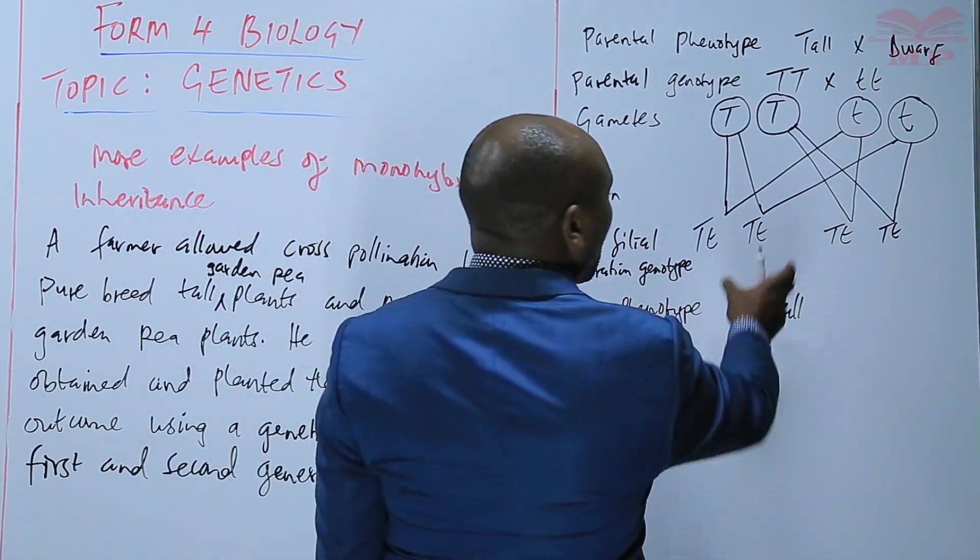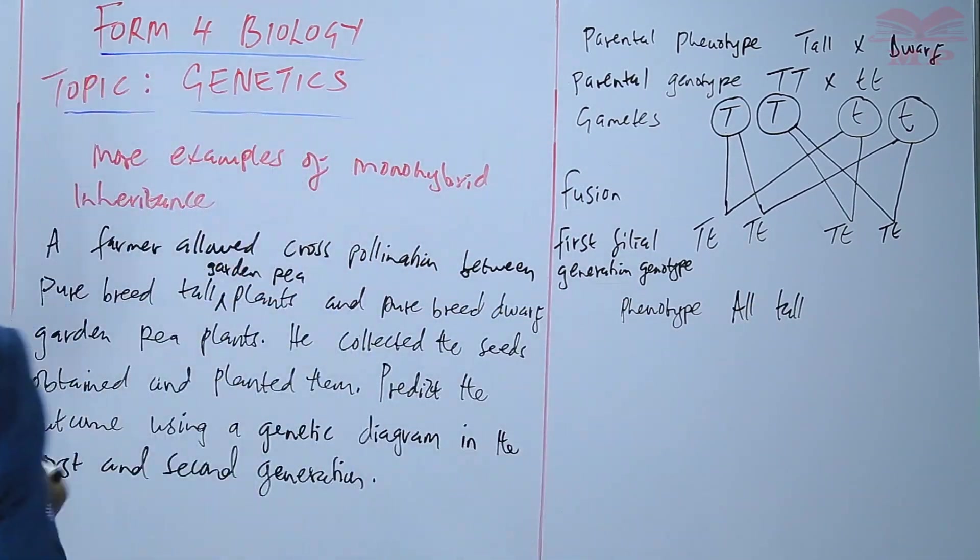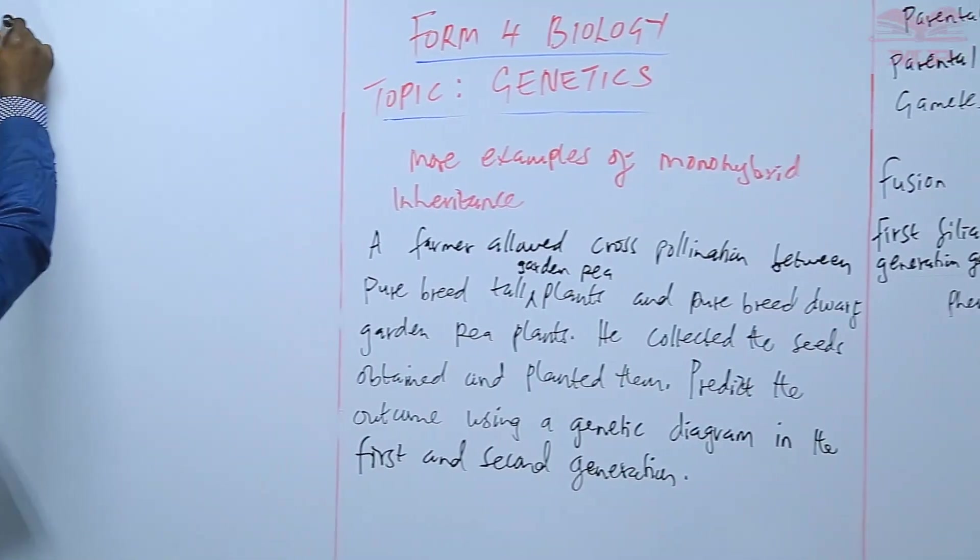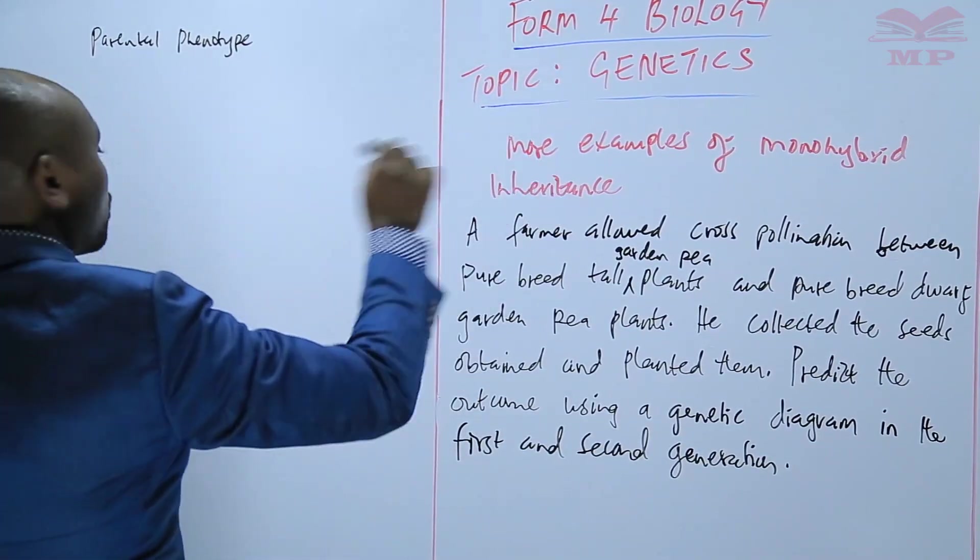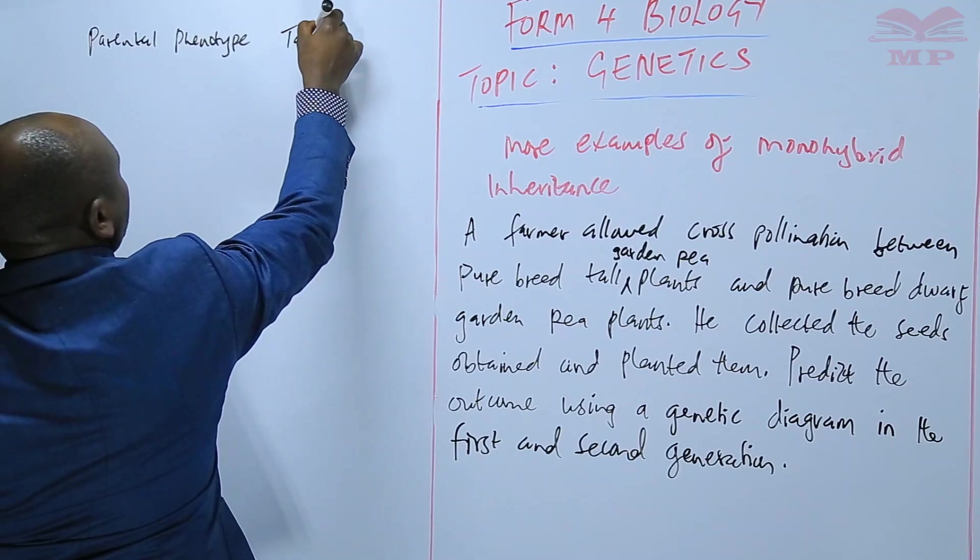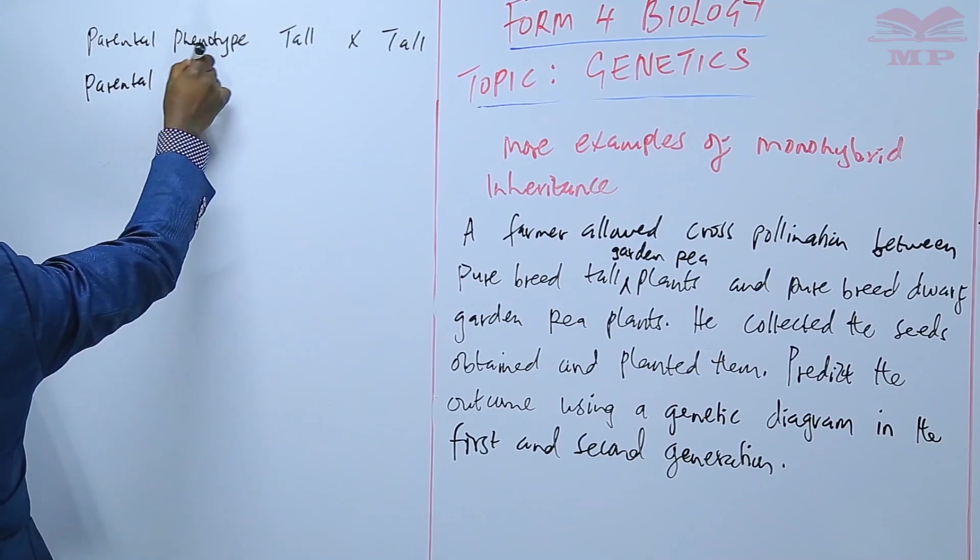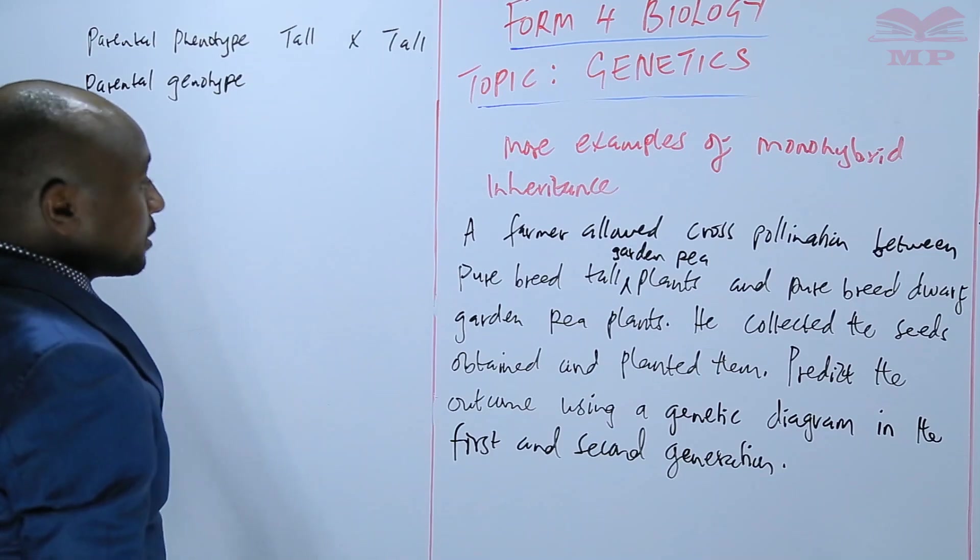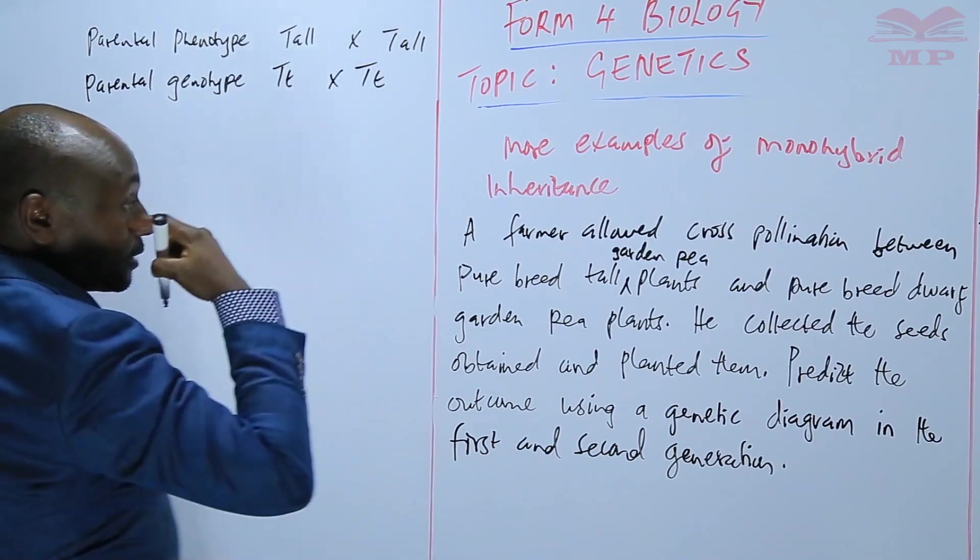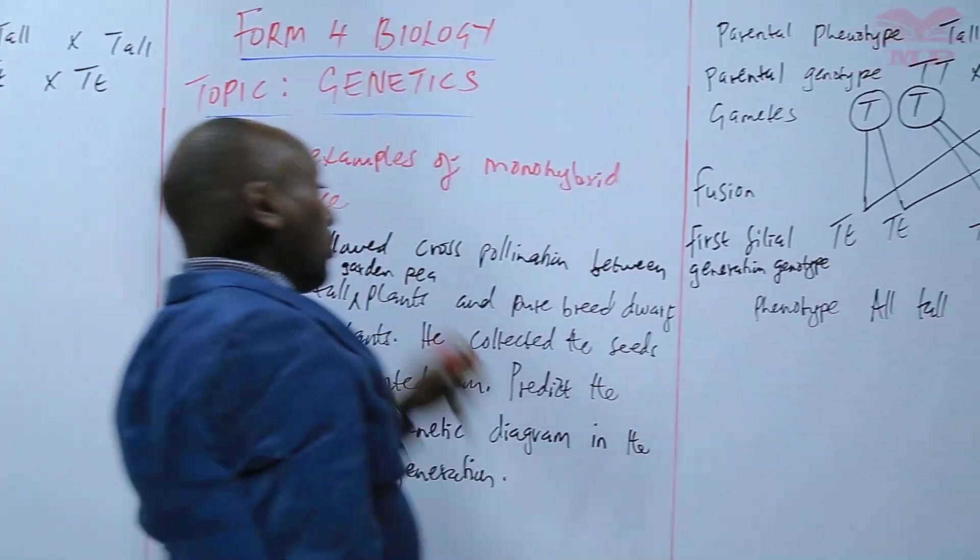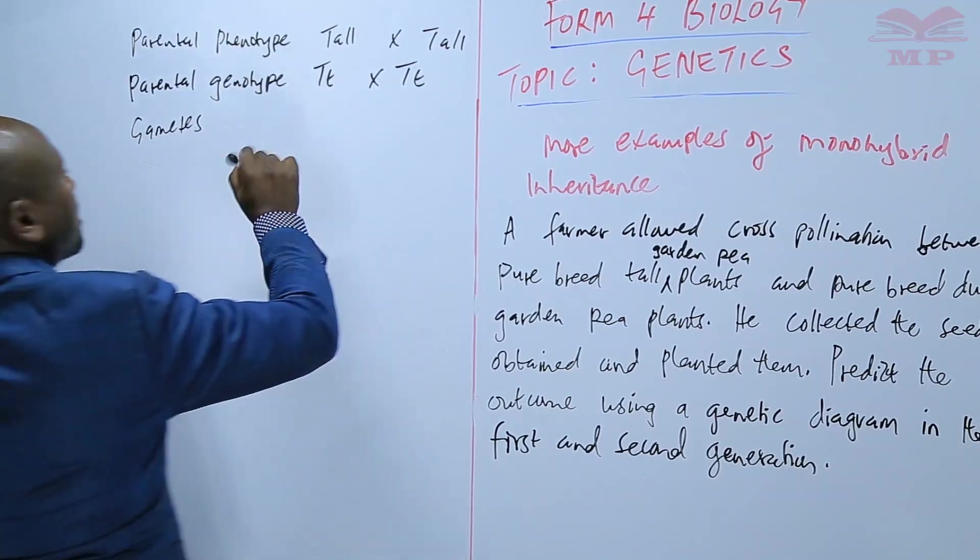The second generation we make these ones to be parents. Again we start from the parental phenotype: tall by tall. The parental genotype is capital T small t by capital T small t. Those we are getting from here because they were both capital and small. The gametes should be circled.